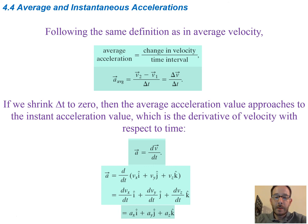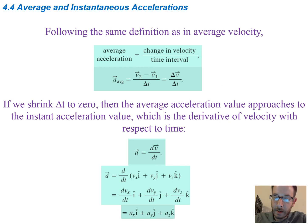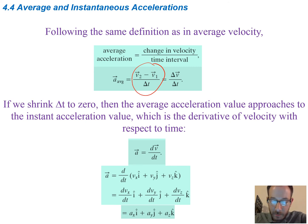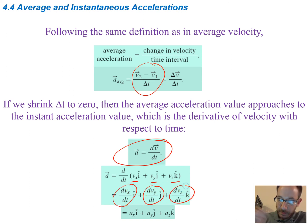Same as finding velocity, we can find acceleration by taking another derivative — the second derivative of the position vector, or the first derivative of the velocity. If you make delta t very small, you end up with dv/dt. You can break it into each component: an i component, a j component, and a k component — each being the derivative with respect to t.